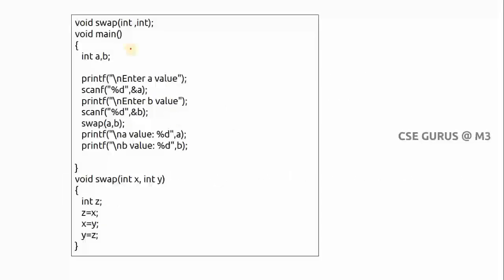Let us take this program. In the main function, I've taken two variables: int a, int b. I'm taking input from the user using scanf with ampersand a and ampersand b. I have written a function call here: swap(a, b). This is what we call a function call.